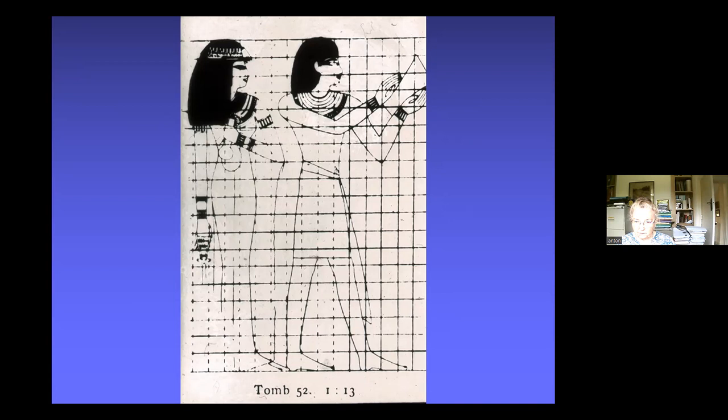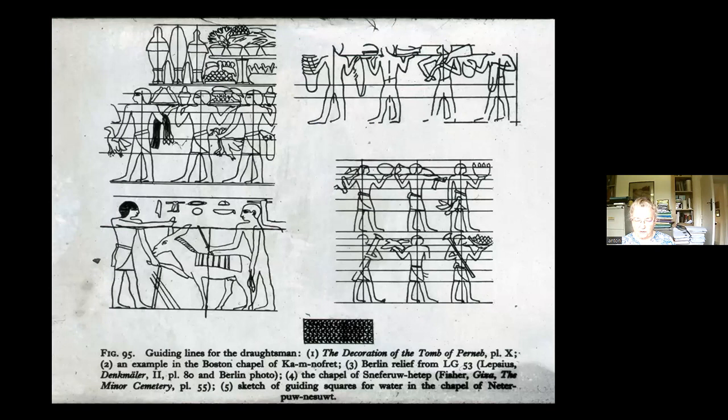In earlier times — going back to around 2800 BC rather than the New Kingdom of about 1500 BC — instead of a grid, lines went through figures to keep them consistent. This canon of proportions and the conventions I've mentioned are applied when representing elite figures: the tomb owner, his wife, their children, other family members, or guests and visitors.